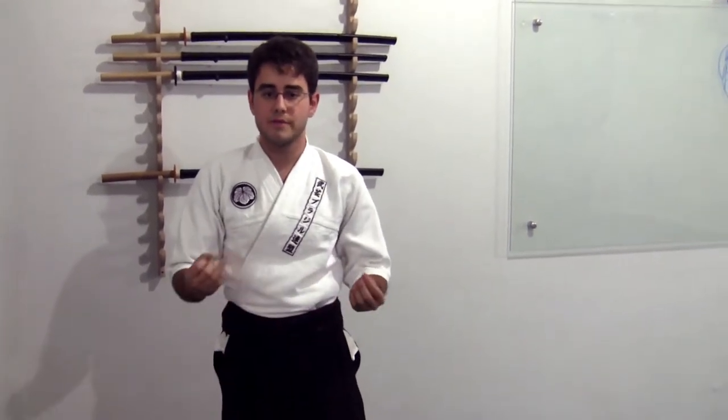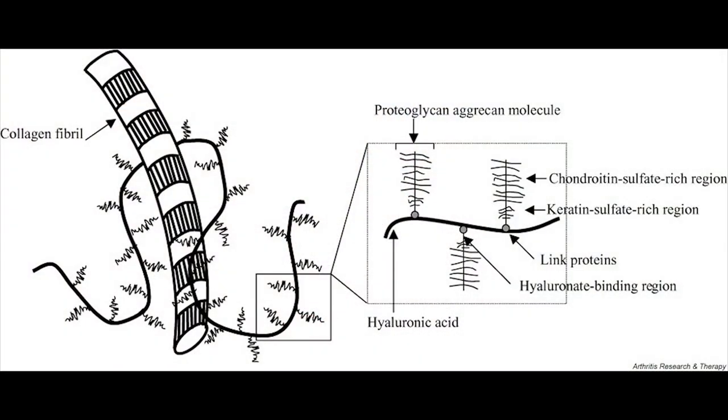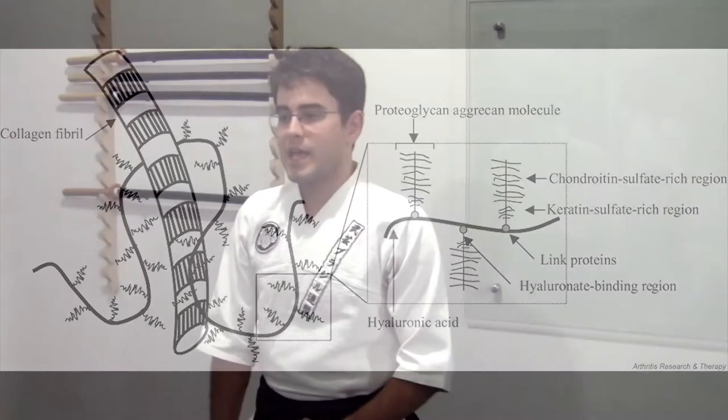Os colágenos são fibras que têm grande resistência elástica. O ácido hialurônico forma um tipo de matriz chamada sulfato de condroitina. Esse ácido envolve as fibras de colágeno, fazendo com que elas se interajam entre si, formando assim uma cadeia, chamada de sulfato de condroitina.